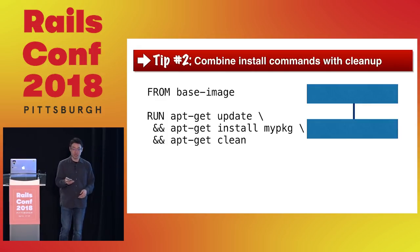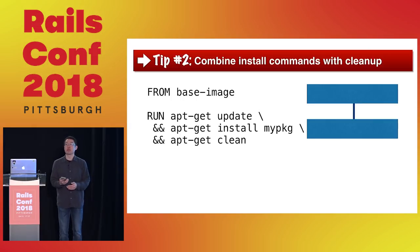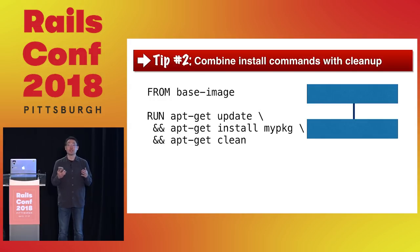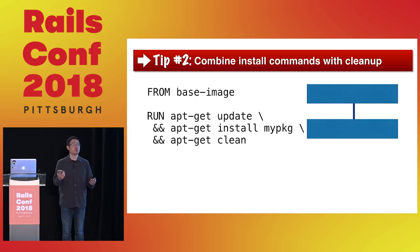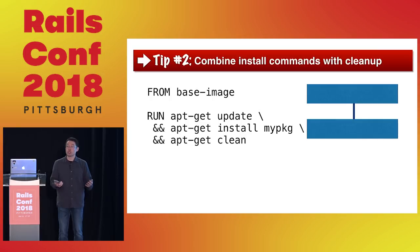Combine your installations with cleanup. If you build from source, download the source, configure and make install, then delete your source directory — all in the same run command — so source files you don't need at runtime don't end up in a layer. Similarly, Alpine Linux is a great distribution for Dockerfiles because it's tiny and has useful features like virtual packages. You can install stuff using APK temporarily, use them, then remove that entire environment — but again, do all of that within the same run command so those temporary packages never show up in the layer.